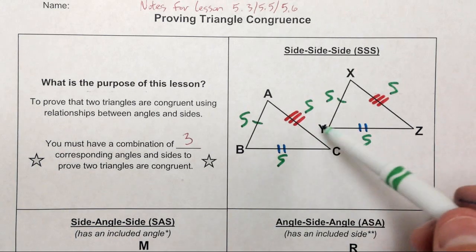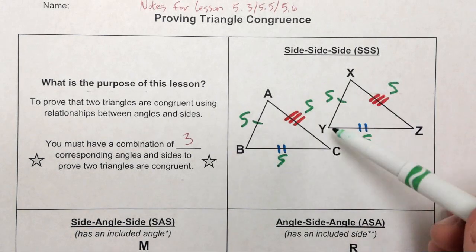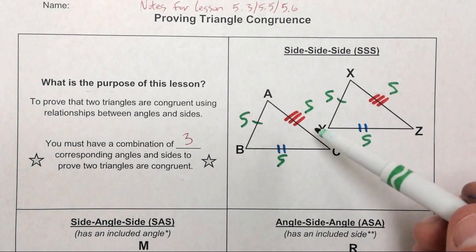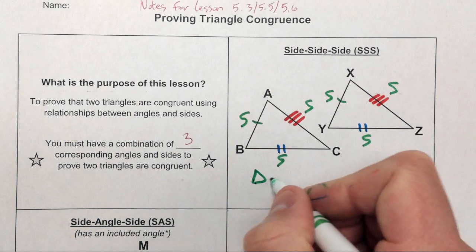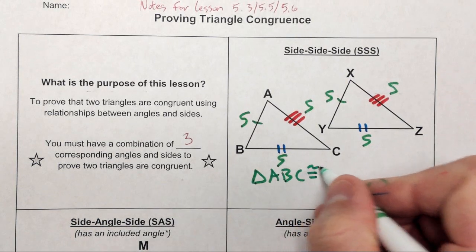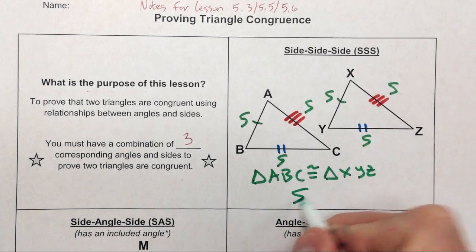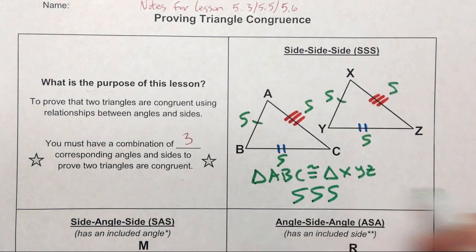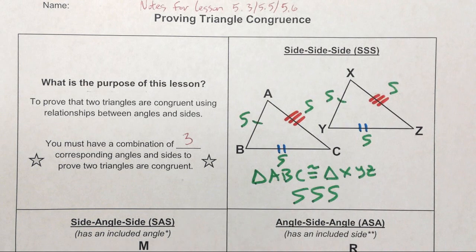Notice here we're focusing on the sides because I'm putting tick marks on the sides. This side corresponds to this side, this side corresponds to this side, and this side corresponds to this one. Since we have three sets of sides that are congruent to each other and that correspond to each other, I can say these two triangles are congruent by the Side-Side-Side postulate. I'm going to write down the congruency statement — these triangles are identical, the angles are the same, the side lengths are the same, so I'm going to say congruent and not similar. Triangle ABC is congruent to triangle XYZ by the Side-Side-Side postulate. A lot of times we're just going to put SSS, but every once in a while you're going to have to worry about the congruency statement.